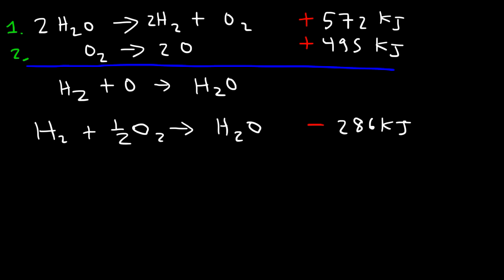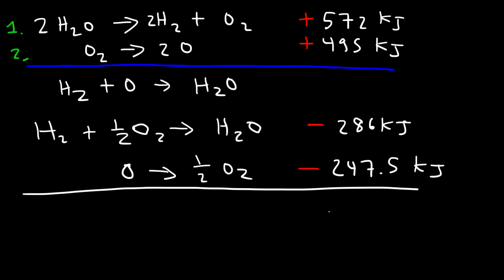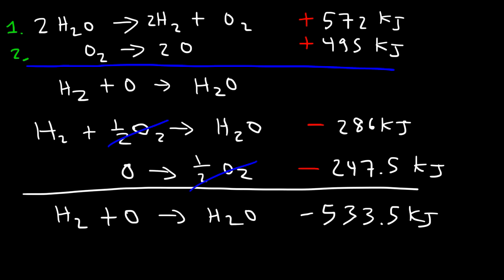We need one atomic oxygen on the left, but in reaction 2 we have two O atoms on the right, so we reverse it and divide by 2. That gives: O → ½ O₂, with ΔH = -495/2 = -247.5 kJ. Adding the two reactions, the ½ O₂ terms cancel, leaving H₂ + O → H₂O(l). The total ΔH = -286 + (-247.5) = -533.5 kJ.